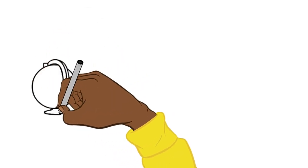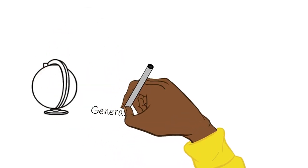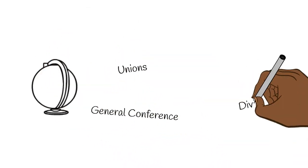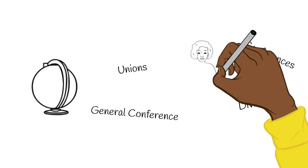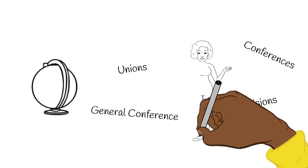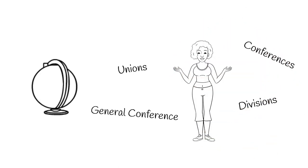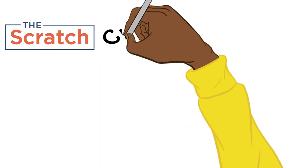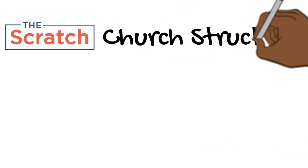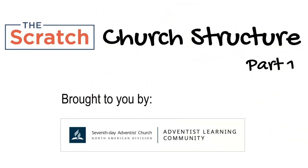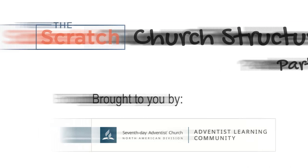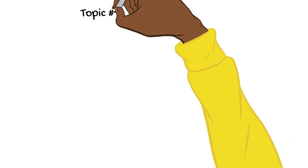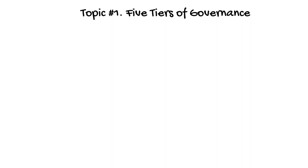With more than 20 million members in over 200 countries, the Seventh-day Adventist church structure can, at times, seem daunting and complicated. Fortunately, we at The Scratch are here to simplify it. Welcome to The Scratch's four-part series on church structure, brought to you by Adventist Learning Community of the North American Division. Our first topic: the five tiers of government.